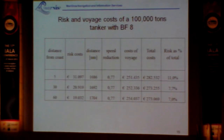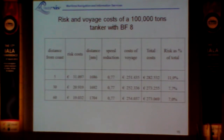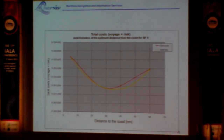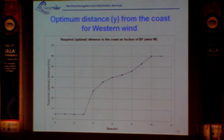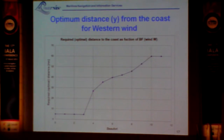We will use the ALARP principle — as low as reasonably practicable — for the costs of a vessel which must make a detour, the operational costs, and if you find an optimum minimum, that's how you can figure out the track for the next vessel. This optimization shows you an optimal distance of say 30 to 40 miles from the coast, and if you have a westerly wind blowing against the Norwegian coast, as a function of wind strength, the distance is optimized balancing risk costs and exploitation costs.